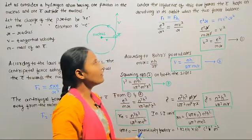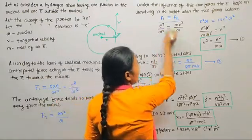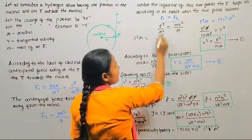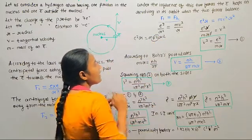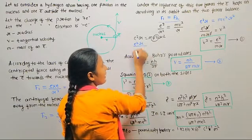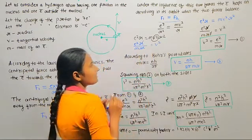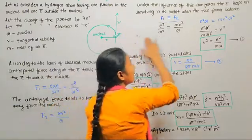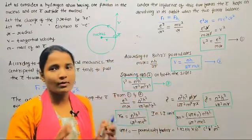We need to find v square. Cross-multiplying: e square into R is equal to mv square into R square. Rearranging, e square into R divided by m into R square equals v square. R and R get cancelled, so v square is equal to e square divided by m r. Call it equation number 1.